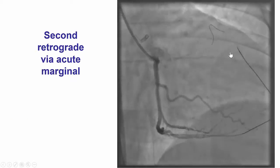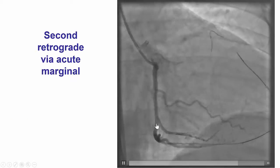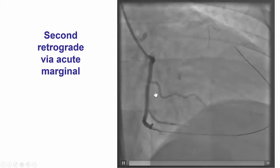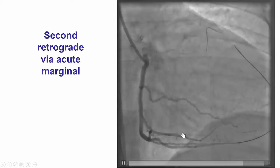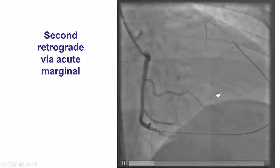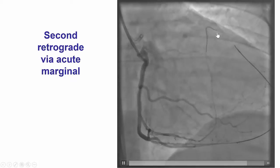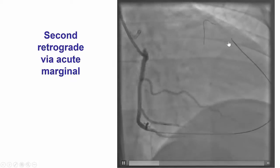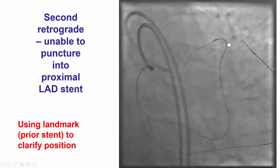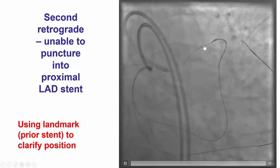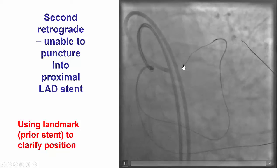We performed a second retrograde crossing through a second microcatheter from another septal collateral and were able to advance a guidewire into the mid-LAD, and then retrograde advance a wire close to the proximal LAD.